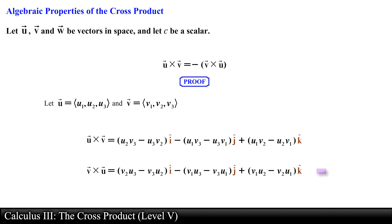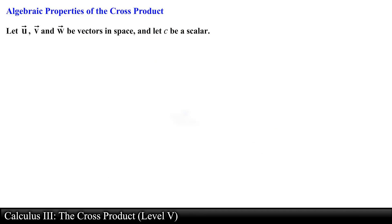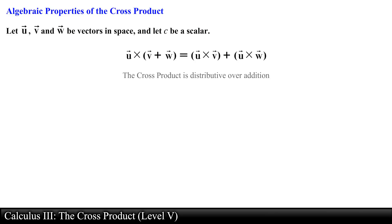Let's take a look at the next property. Vector u crossed with the sum of vector v and vector w is equal to vector u crossed with vector v plus vector u crossed with vector w. In other words, the cross product is distributive over addition.